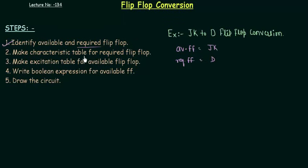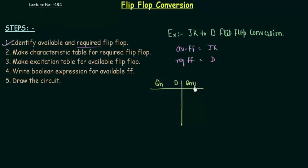The next step is to make the characteristic table for the required flip-flop, which is the D flip-flop. The inputs to the characteristic table are Qn and D. The output Qn+1 is the same as D. So the table has combinations 0,0 / 0,1 / 1,0 / 1,1 for Qn and D, and Qn+1 equals 0, 1, 0, 1 respectively. Our second step is now complete.